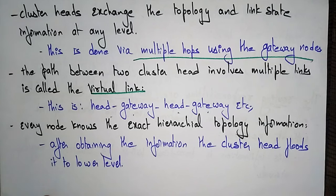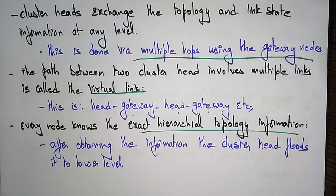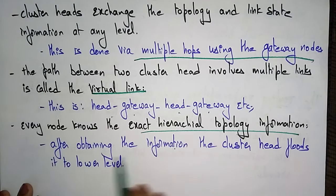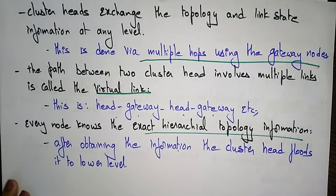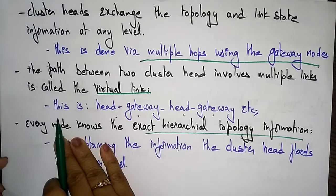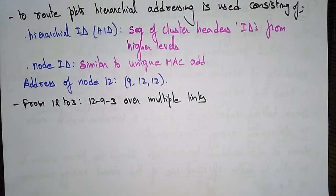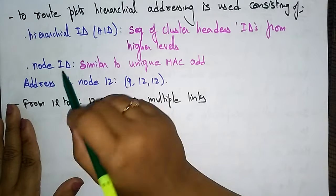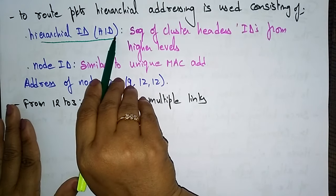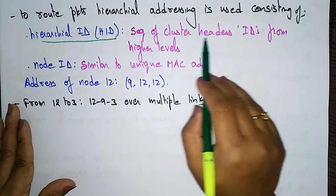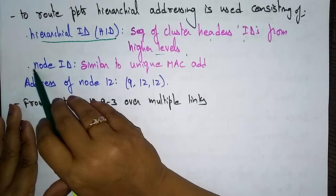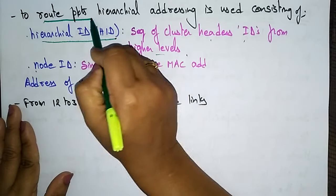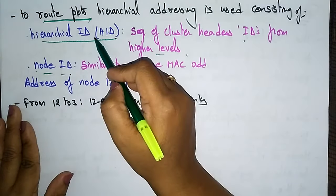Every node involved in the network knows the exact hierarchical topology information. After obtaining the information, the cluster head floods it into the lower level. To route the packets, hierarchical addressing is used. The hierarchical ID, called HID, consists of the sequence of cluster header IDs from higher levels.